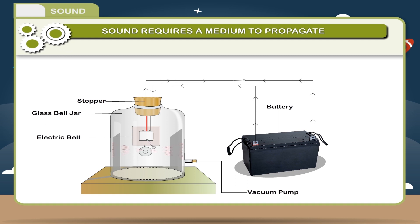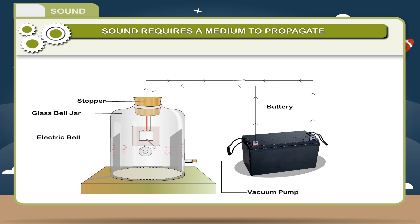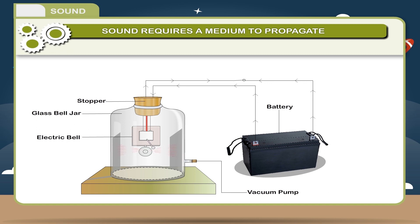Now, take the air out by a suction pump and make a vacuum inside. Keep the cover tightly on the jar. Now switch on the electric bell — no sound will be heard.